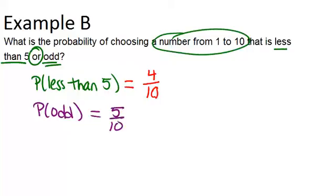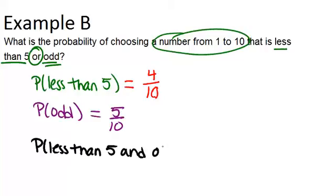Now we have to think about the overlap, if there is any — that would be the probability that we choose a number less than 5 and odd. What are the numbers less than 5 that are also odd? That would be 1 and 3. So the probability of a number being less than 5 and odd is 2 out of 10, because there are two numbers — 1 and 3 — that are both less than 5 and odd.